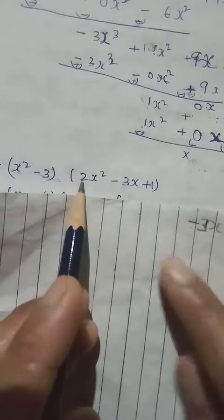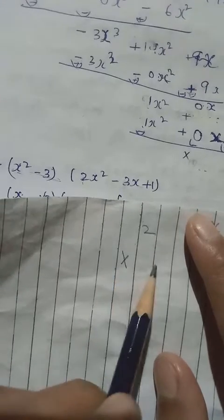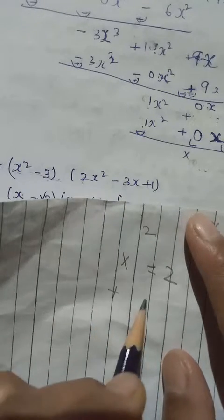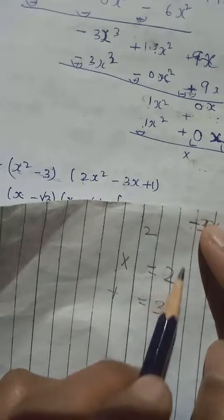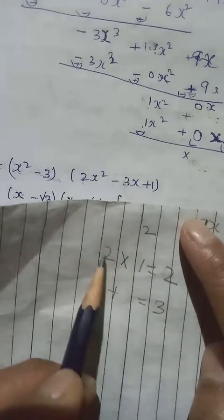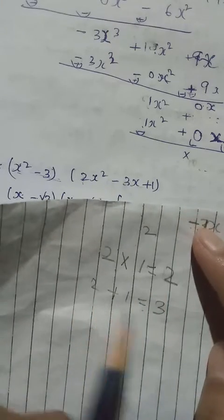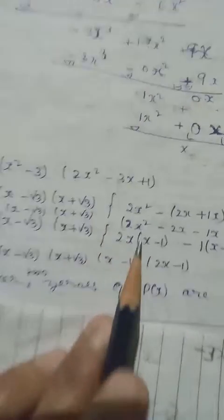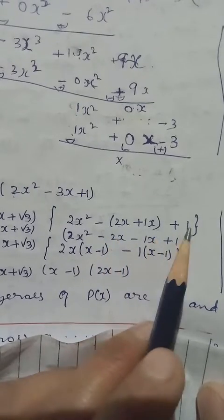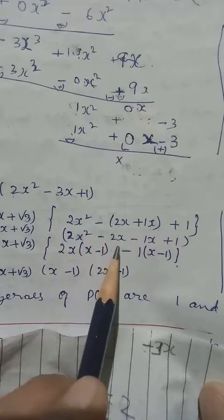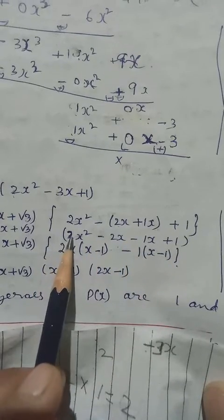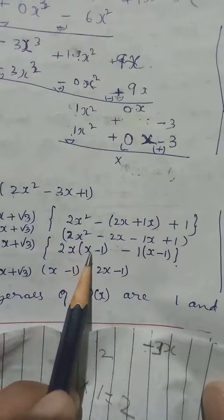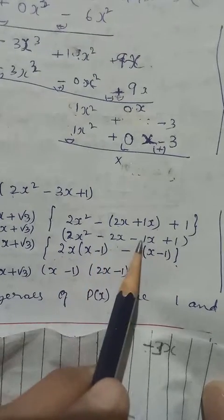To find the remaining two zeros, split the middle term of 2x² - 3x + 1. Multiply 2 × 1 = 2; find two numbers that multiply to 2 and add to 3 — those numbers are 2 and 1. Rewrite as 2x² - 2x - x + 1. Factor: 2x(x - 1) - 1(x - 1).